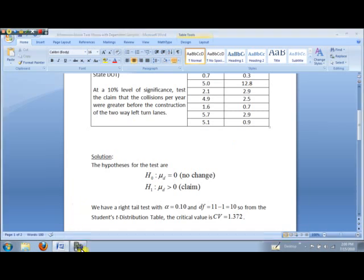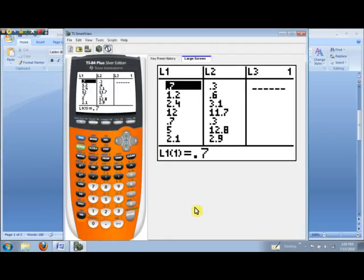I've taken the liberty of putting the data in list number one before the construction, list number two after the construction. Now we want to compute the differences in the ordered pairs.